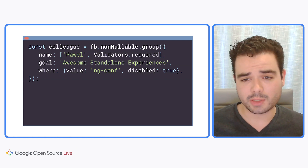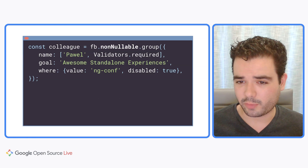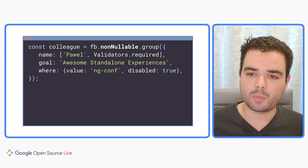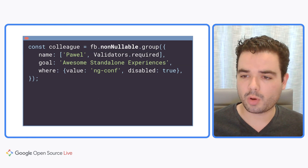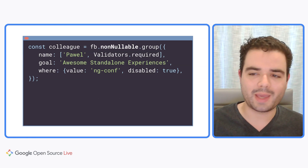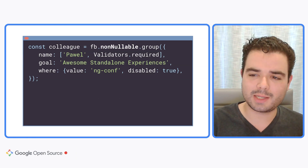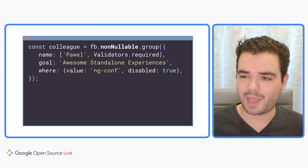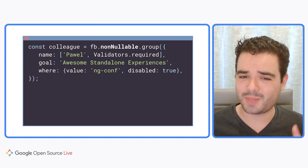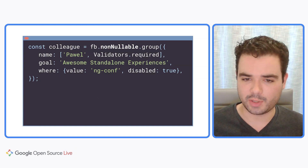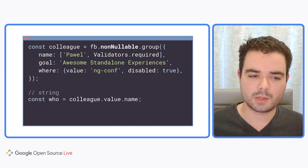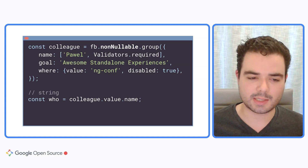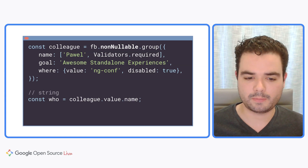We could create controls directly with the non-nullable argument to avoid having null in the type, but FormBuilder now gives us a more concise way. FormBuilder now has a new non-nullable field. When used with a group or array, it will make all the implicit inner controls non-nullable without the need to repeat yourself on every control. So here, Pavel's name just has type string.